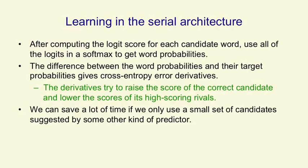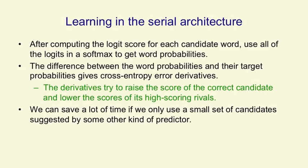We can save a lot of time in this architecture if, instead of considering all possible candidate words, we only consider a small set, perhaps candidate words suggested by some other predictor. For example, we could use the neural net to revise the probabilities of the words that the trigram model thinks are likely.